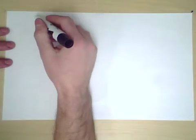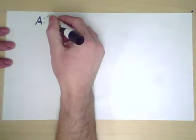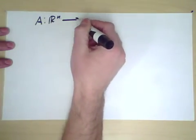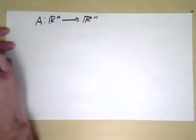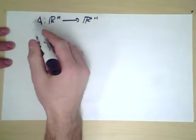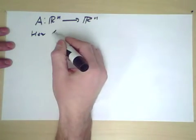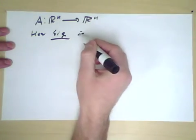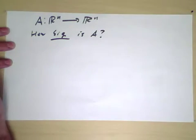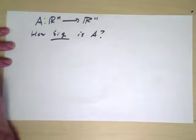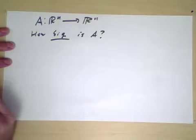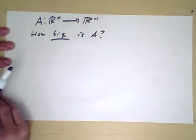When we think of a matrix as being a function, say A, from R^n to R^n, in this case a square matrix, we might ask in some sense how big is the matrix in the sense of being a function? That might seem like a strange question. What do we mean by the size of a function?